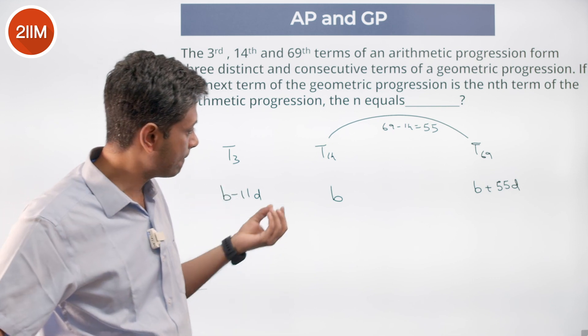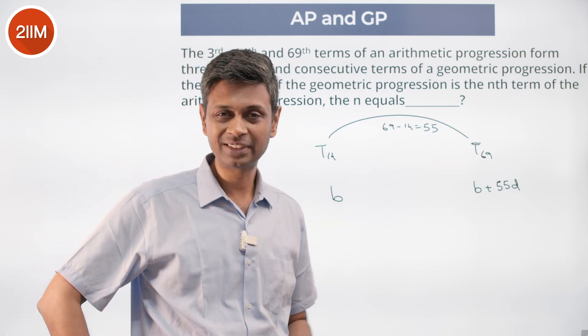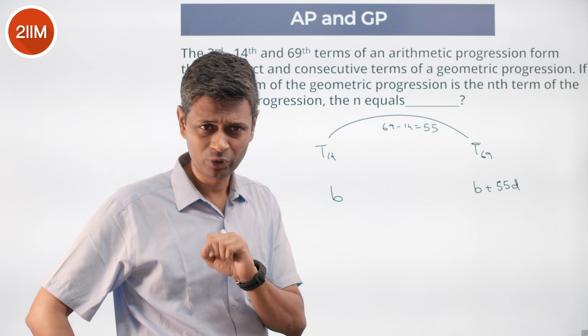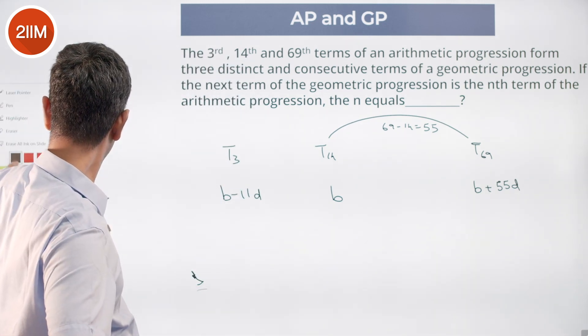Easier. I can say b square is equal to ac and then simplify and then find b. So my life is easier if I can anchor around a middle term.